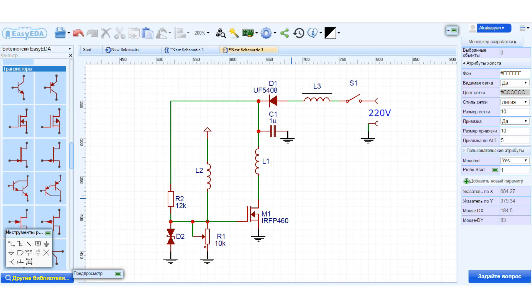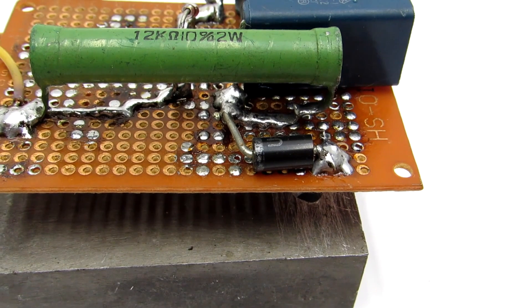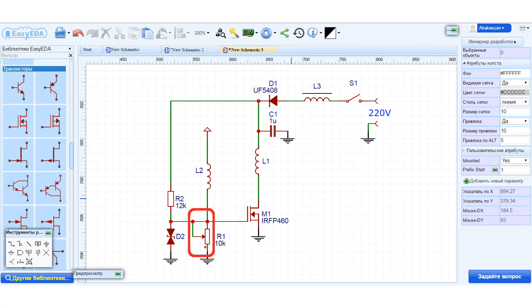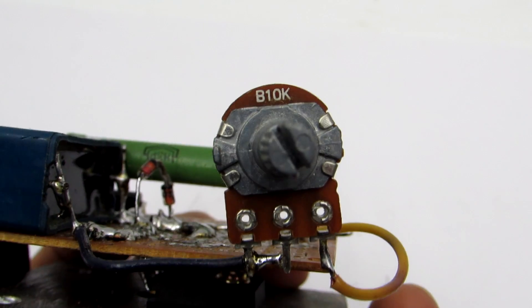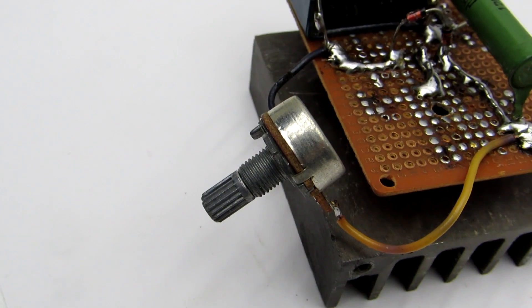The resistor R2 is 10 to 12 kOhms. The variable resistor is 10 to 12 kOhms. If you have a multi-turn variable resistor, it is best to put it. It makes it easier to adjust the device.